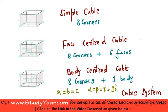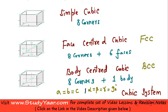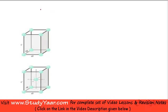Face-centered cubic is also referred to as FCC, and body-centered cubic is also referred to as BCC. In your cubic system, A is equal to B is equal to C, and all of alpha, beta, gamma are equal to 90 degrees. The next two varieties come under the tetragonal system of lattices.